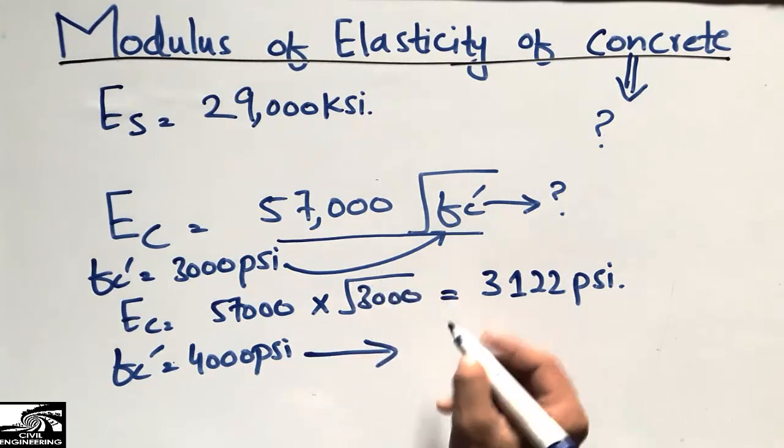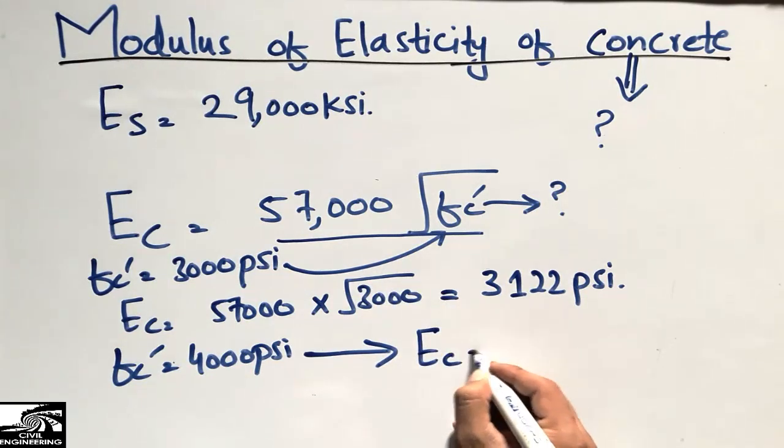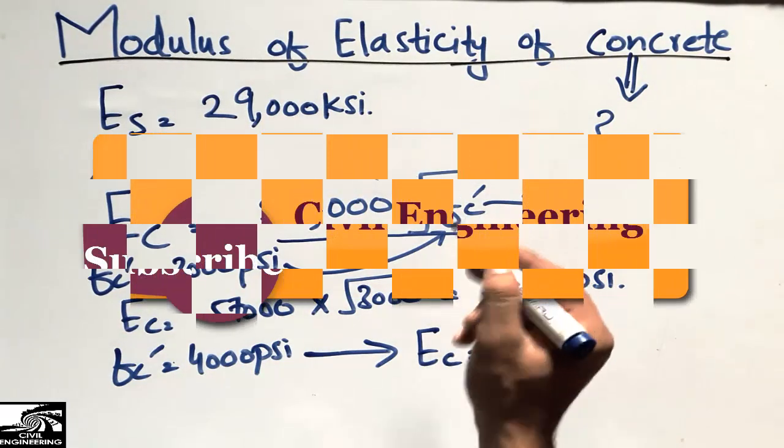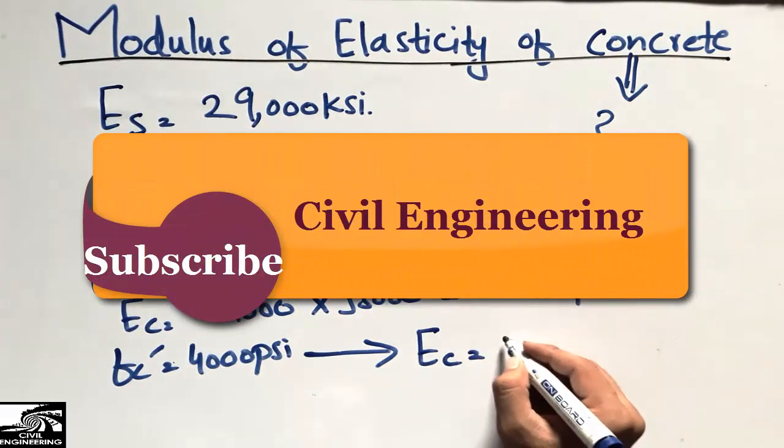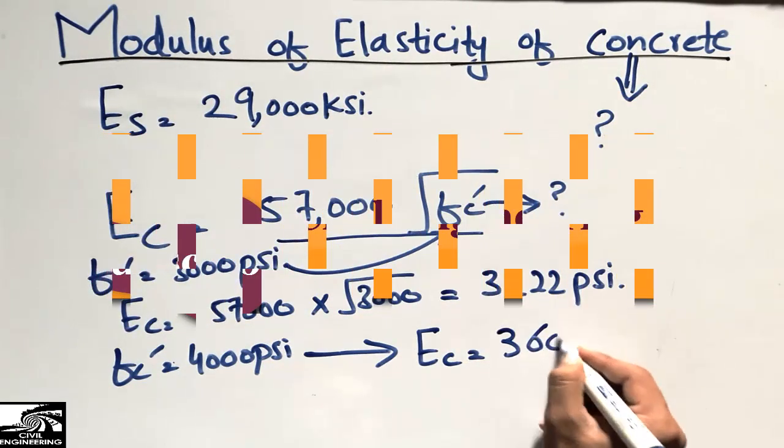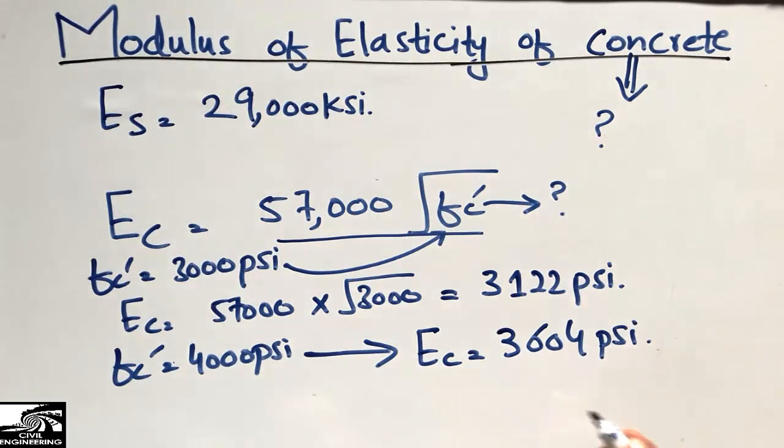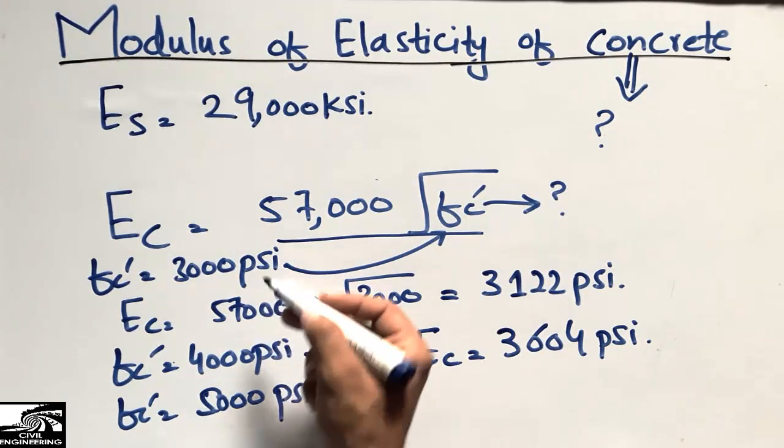So for the grade of 4,000, we obtain the elasticity of the concrete by putting the value of 4,000, and I get 3,604 psi. For f'c equal to 5,000 psi of the concrete, which are usually used, these three types of grades are usually used: 3,000, 4,000, and 5,000.